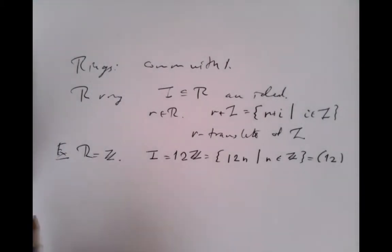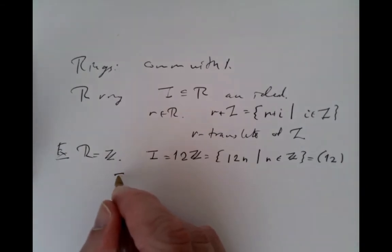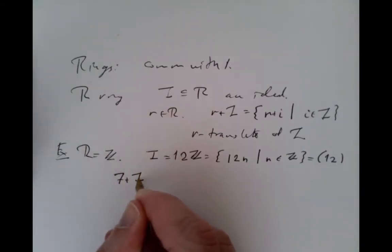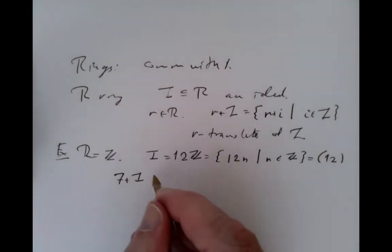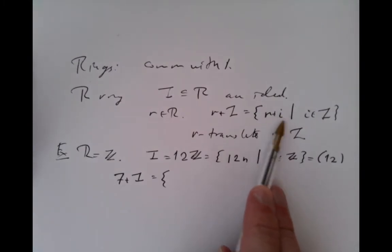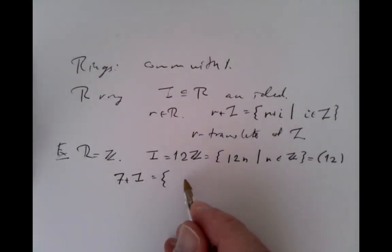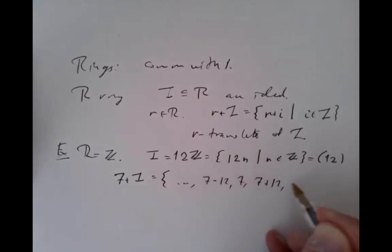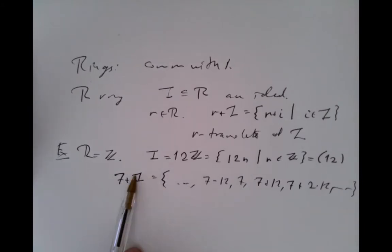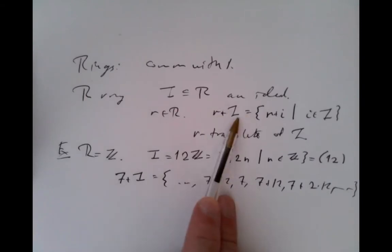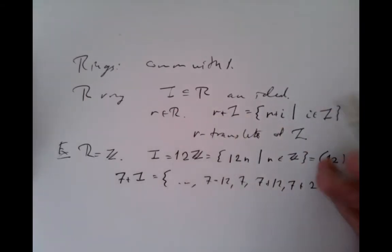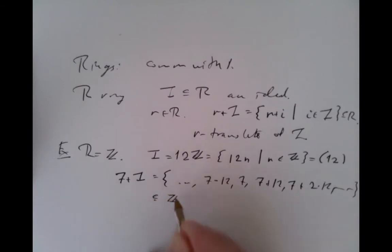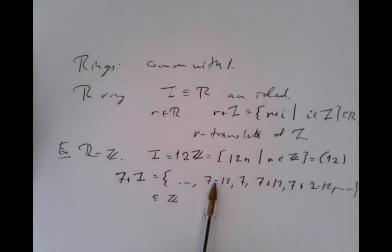That's an example of an ideal inside this ring. If we look at the translate 7 plus I, where our little r is 7, that's all the numbers that are a multiple of 12 plus 7. So it would be ..., 7 minus 12, 7, 7 plus 12, 7 plus 2 times 12, and so on. So it's not a number, it's an infinite set — a set of integers consisting of all the integers that are 7 more than a multiple of 12.